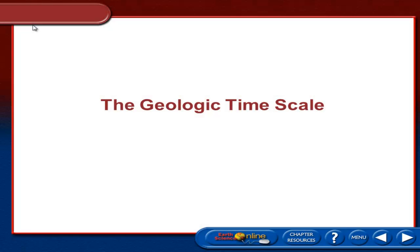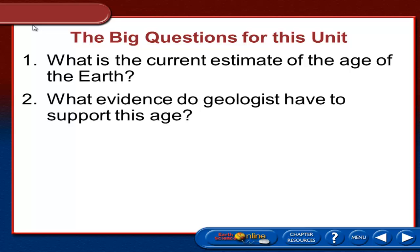This is the first vodcast for unit 3, and in this unit we're going to be looking at the geologic timescale. We're skipping to chapter 12 starting on page 336. The geologic timescale gets into historical geology — what has gone on in earth's past and how do we know. The big questions for this unit are: what is the current estimate of the age of the earth, and what is the evidence geologists have to support this age?